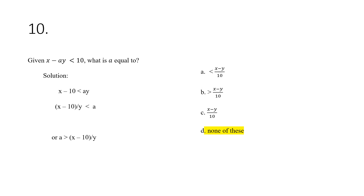For our final item, we rearrange the values to get x minus 10 less than a times y. To isolate a, y becomes a divisor, so our final answer for the expression is: (x minus 10) divided by y is less than a. The answer is 'none of these.' Thank you very much for your attention — please comment, subscribe, or hit the notification bell.